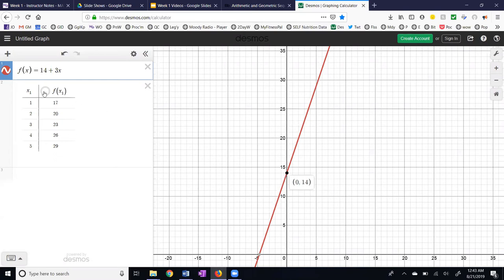So let's go ahead and graph the sequence instead and we see here we have a1 is 17, a2 is 20, a3 is 23 and so on.